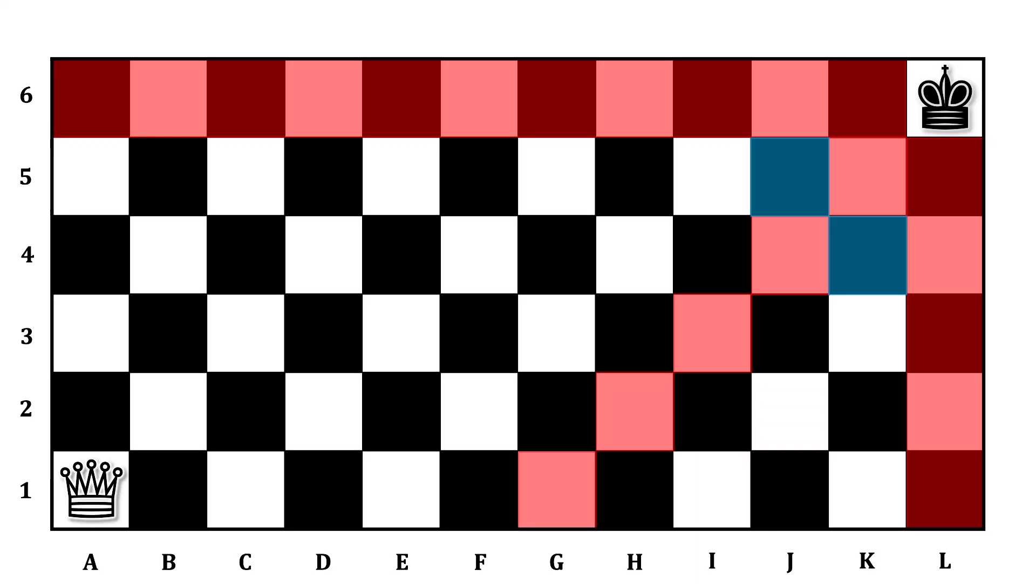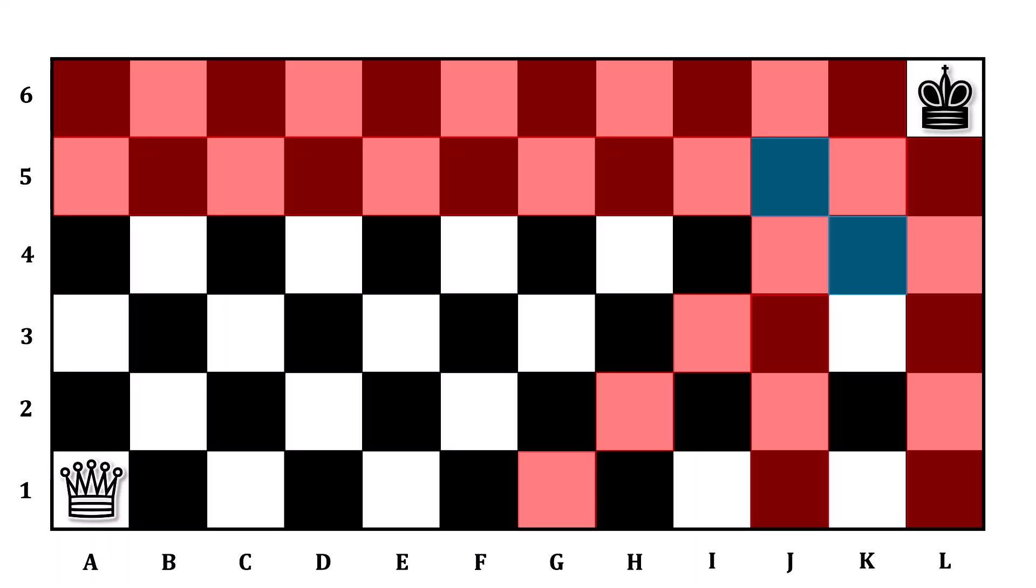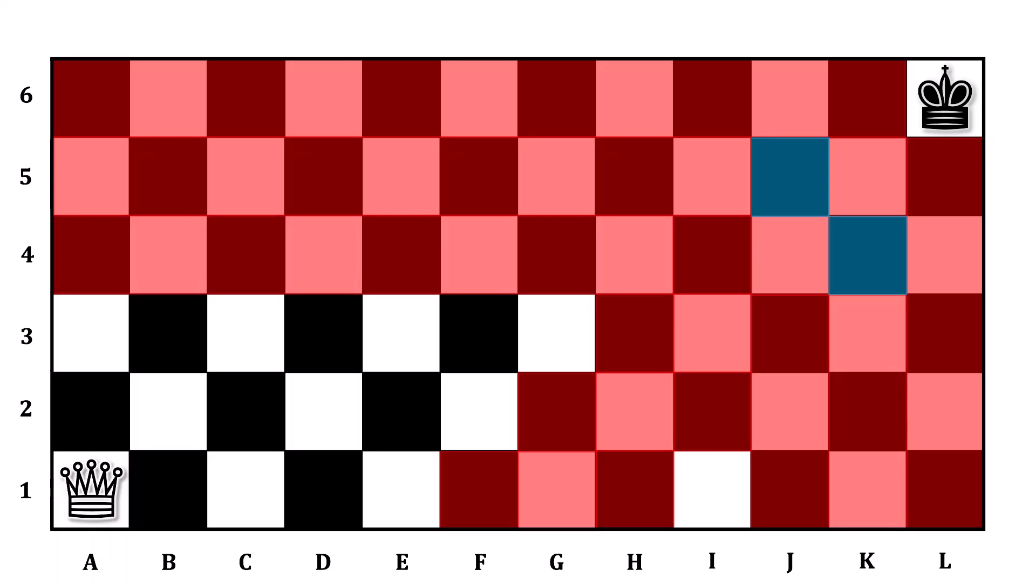Backward induction can take us even further. Now that we know that J5 and K4 are winning squares, it becomes imperative to not finish your move in a place that your opponent could then advance to one of those squares. For example, think about the remaining squares on row 5 and column J. If you were to land the queen on any one of those squares, your opponent would be able to advance to J5 and thereby secure the victory. It's also just as bad to go anywhere along the diagonal that leads to J5. So all of those are shaded in as no-go zones.